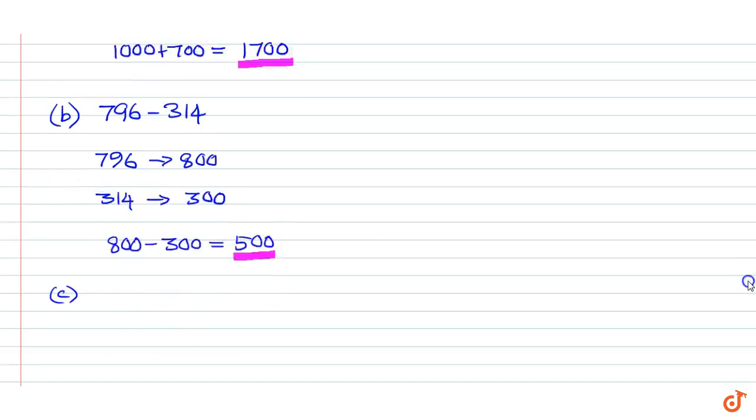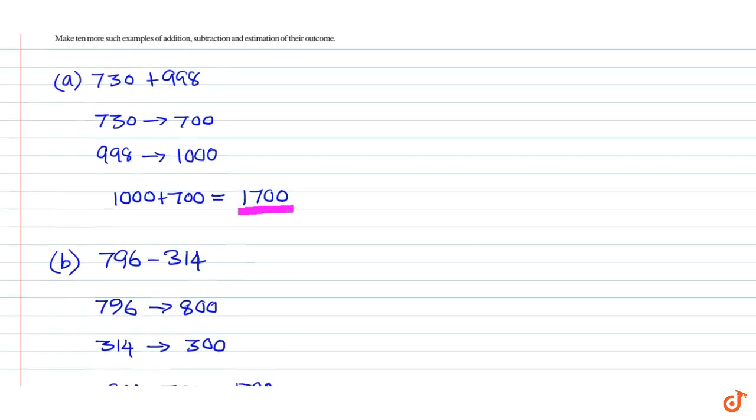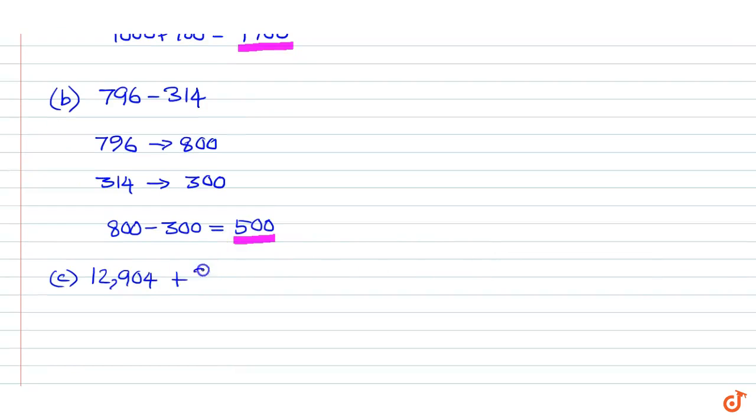12904 plus 2888. 12904 rounds off to nearest 1000, that is 13000.